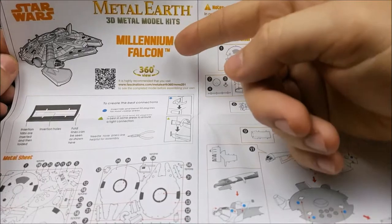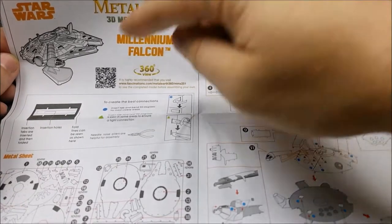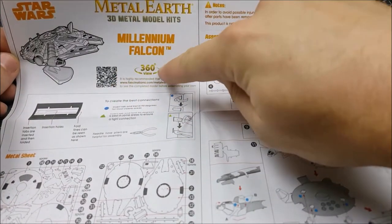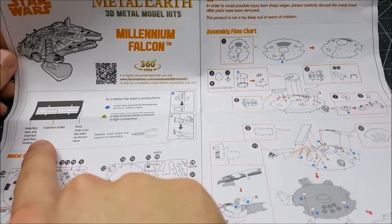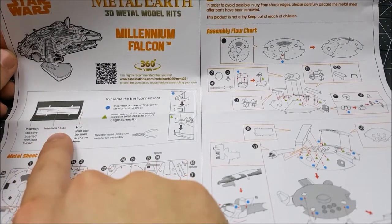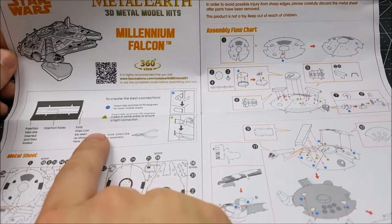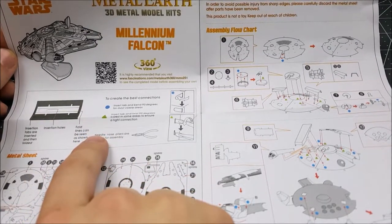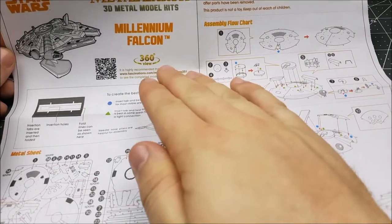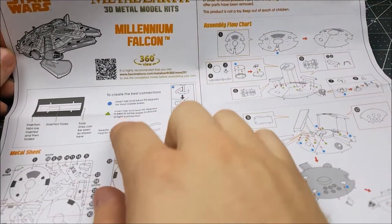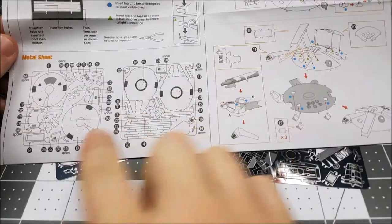On the instructions, we have this awesome QR code here, which is going to give us that 360 view of the Millennium Falcon if we need it, some instructions on how the insertion holes and tabs work, and how we need to fold things if we need them. Now, when it comes to our circles here at the very top, we really want to make sure that we are taking our tabs and bending them over. With our triangles, we want to make sure we grab them and twist them for a nice, tight, secure connection.